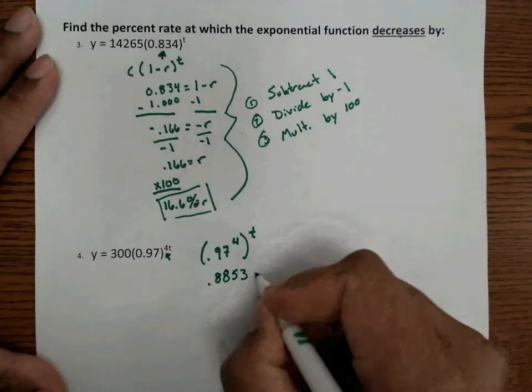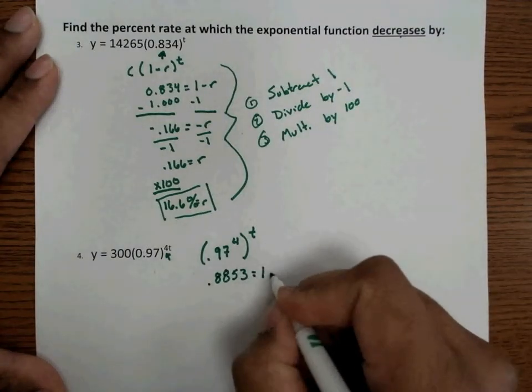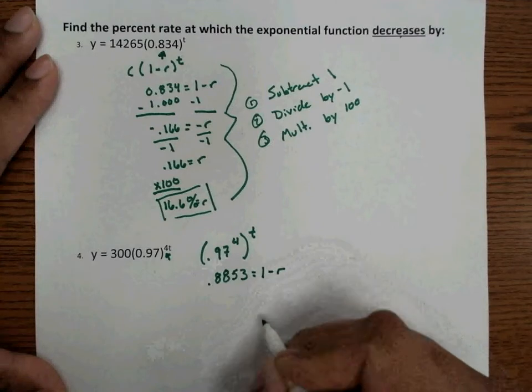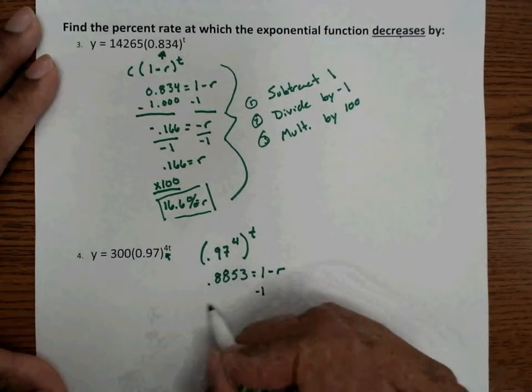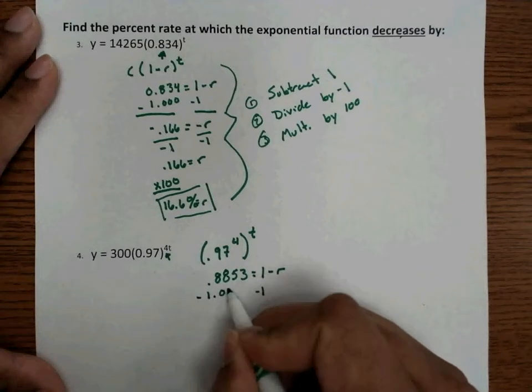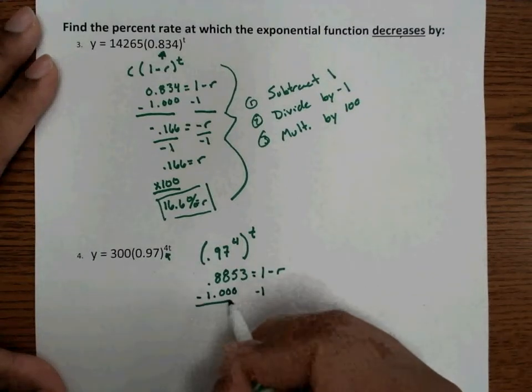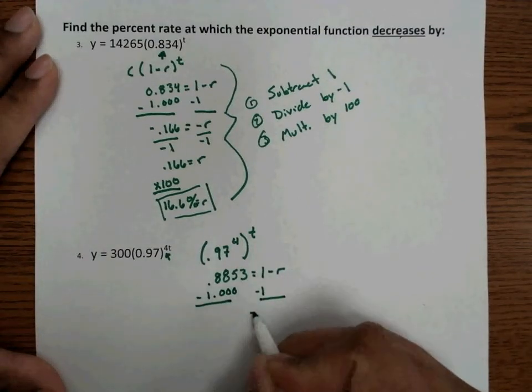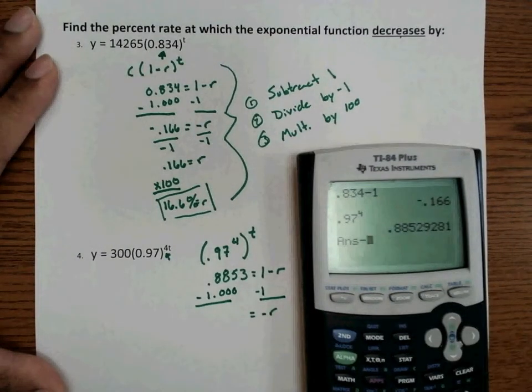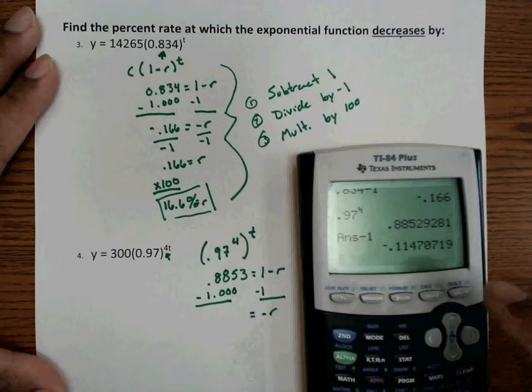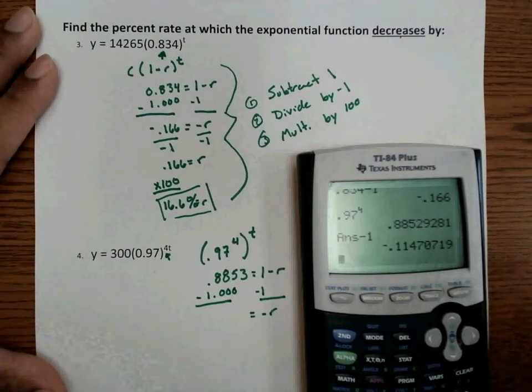And remember, this is equal to 1 minus r, because that's the inside portion. We subtract the 1 on both sides. So we have negative r on the side. If we take that answer and subtract the 1, we get 0.1147.